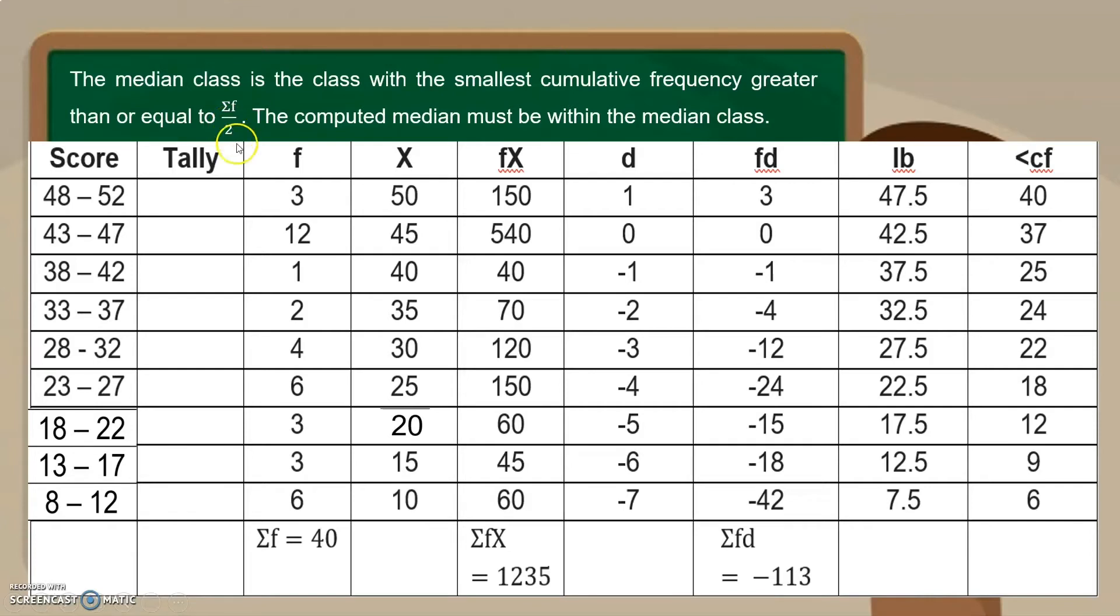Ngayon, ibig sabihin sa 40 scores, nasaan kaya dyan yung ika 20 yet na score? Paano natin siya makukuha? Kakailanganin natin itong CF para mahanap natin yung 20. Okay? So, tingnan natin. Dito sa 6, nandyan ba yung ika 20? Obviously, wala. Yung 9, wala din. Kasi 9 pa lang eh. Eh, ito hanggang 12 na, andyan pa ba yung 20? Wala pa rin. 18, nandyan na ba? Wala pa rin. Hindi pa rin dyan papatak yung ika 20 yet na score. Eh, how about sa 22?